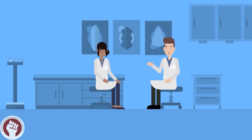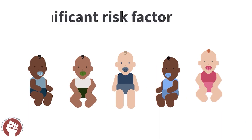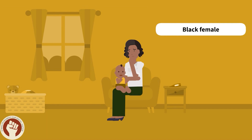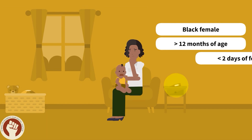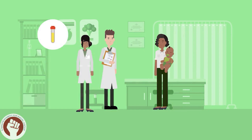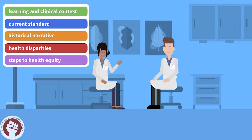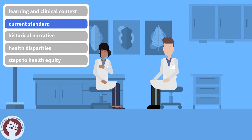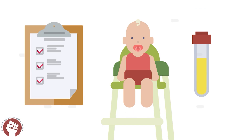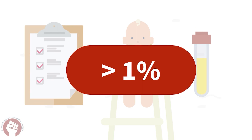Based on the American Academy of Pediatrics 2011 and 2016 UTI clinical practice guidelines, non-Black race was a significant risk factor for UTI. The guidelines propose that a Black girl greater than 12 months of age who has less than two days of fever has less than a one percent probability of having a UTI and recommends against further testing. For over a decade, risk calculators for pediatric UTIs have included non-Black race as a risk factor. But if our patient were instead a white female with the same clinical history, she may have received a urine analysis because the difference in her race would have placed her above the one percent probability of having a UTI.